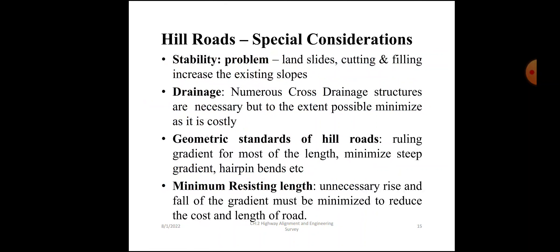Hill road special considerations include stability, drainage, and geometric standards. Stability problems include landslides, and cutting and filling that increase existing slopes. Numerous cross drainage structures are necessary but should be minimized as they are costly. Geometric standards of hill roads include ruling gradient for most of the length, minimum steep gradient, and hairpin bends. Minimum resisting length: unnecessary rise and fall of gradient must be minimized to reduce cost and length of route.